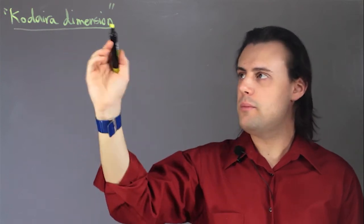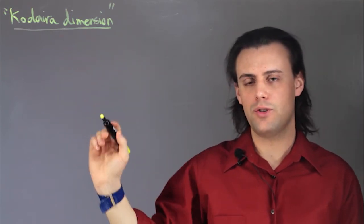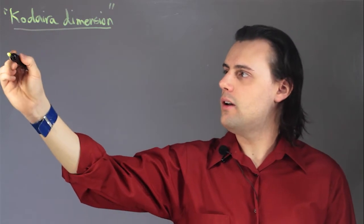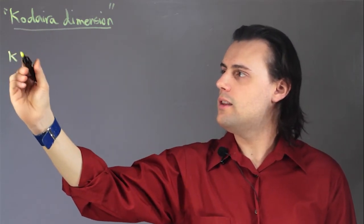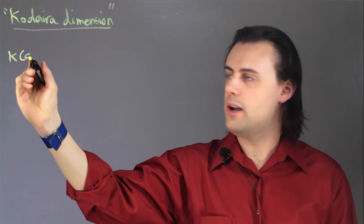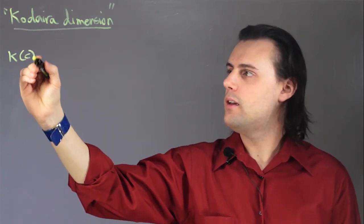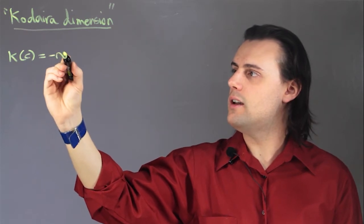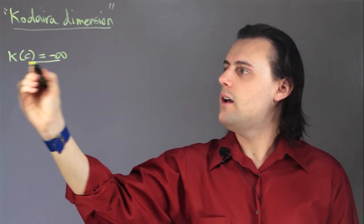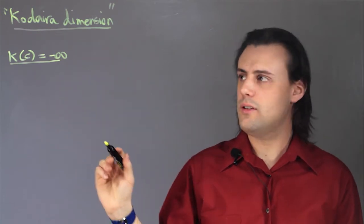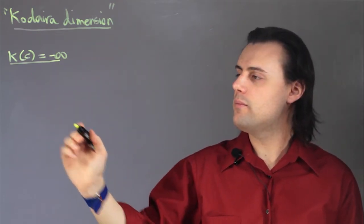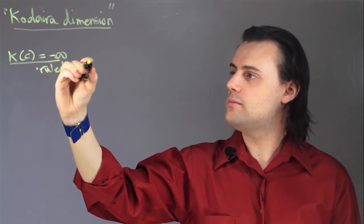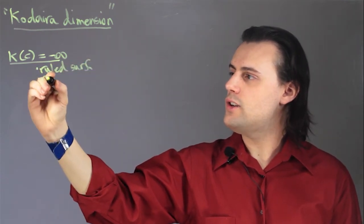Under dimension 2, since we're dealing with algebraic surfaces, there are four types of algebraic surfaces, and these types are characterized by their Kodaira dimension. The first type is if the dimension is negative infinity, and the types of surfaces that have this property are, for example, ruled surfaces and rational surfaces.